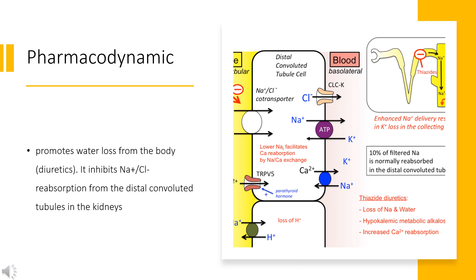Thiazides have been shown to prevent hypertension-related morbidity and mortality, although the mechanism is not fully understood. Thiazides cause vasodilation by activating calcium-activated potassium channels of large conductance in vascular smooth muscle, and by inhibiting various carbonic anhydrases in vascular tissue.